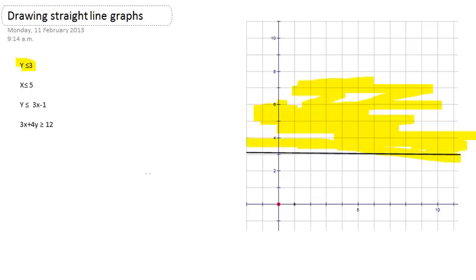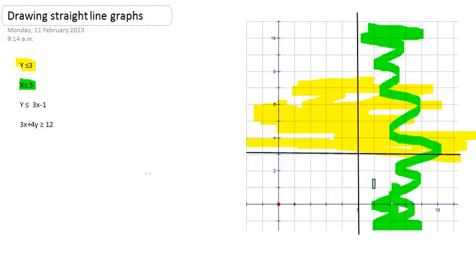So I'm going to do exactly the same with the line x is less than or equal to 5, so I'm going to draw a vertical line of x equals 5, because I'm going to pretend it's an equals, so there's my line, and then I'm going to colour out all the bits that don't work.